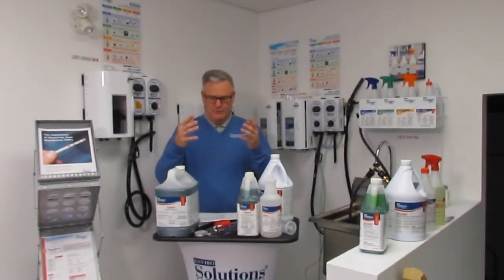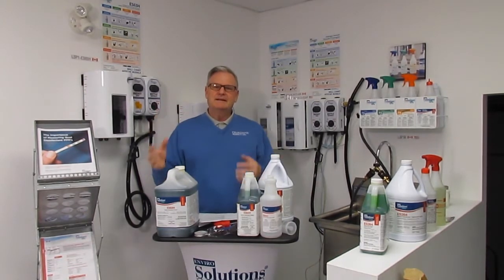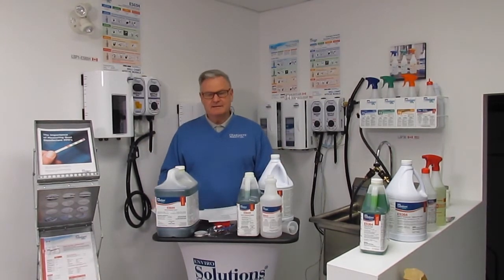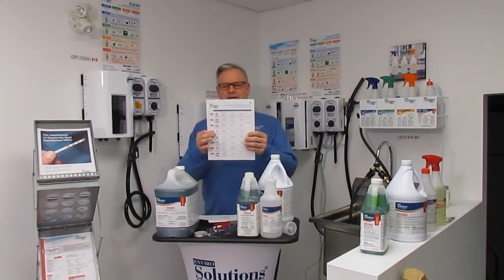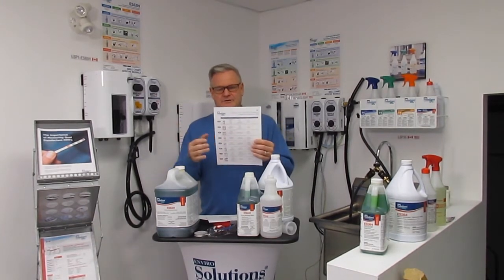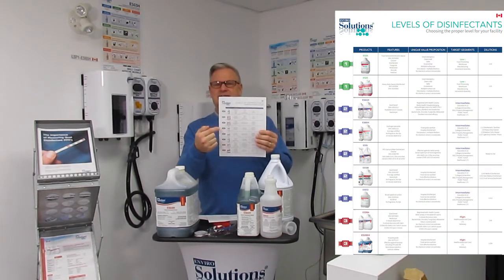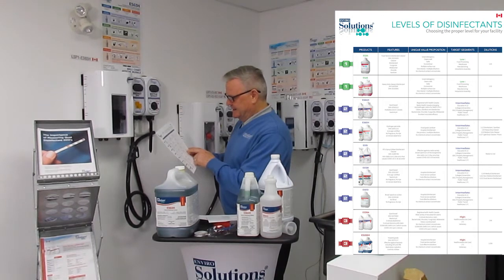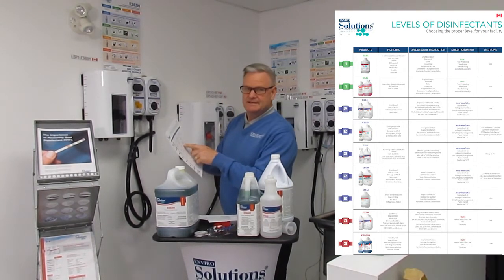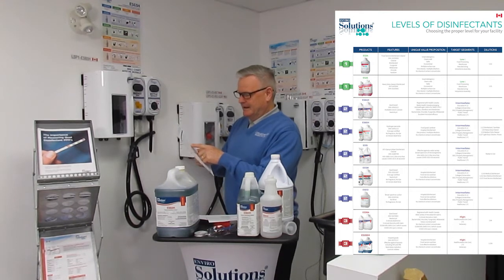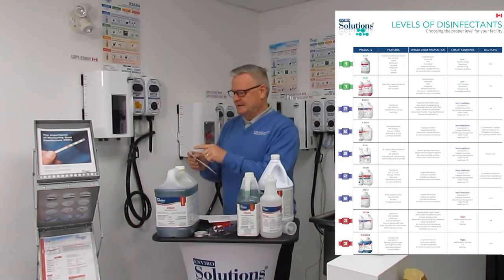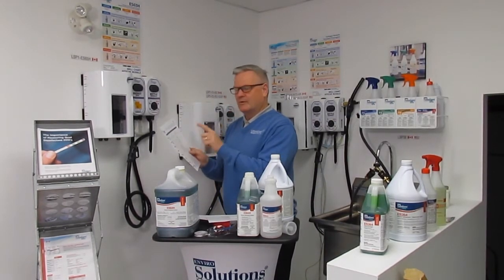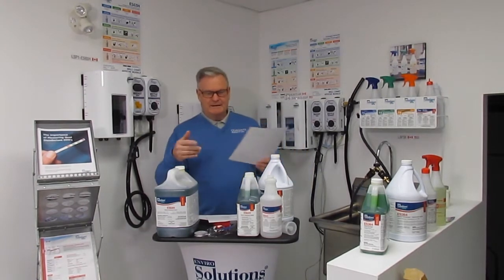Let's talk about 64H. Number one: intermediate disinfectant level — great for all of those facilities. If you're wondering which one to choose and want some short notes, you go down this chart and you'll see 64H is used in education, K–12, college and universities, building service contractors, property management, public facilities, healthcare, and LTC. You can see it's rated at number two, which is intermediate. The dilution ratio is one to 64. It'll tell you really the benefits of what that is.